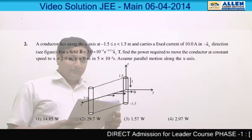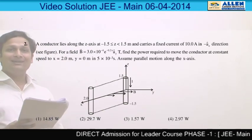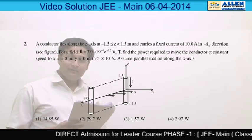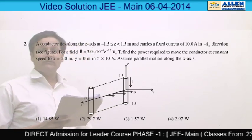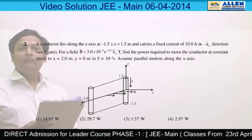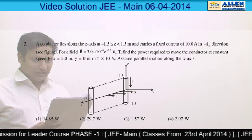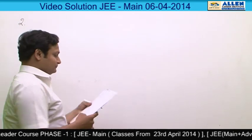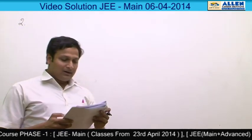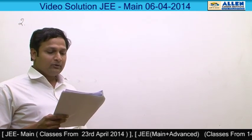Question number 2. The basic philosophy behind this question is the force on a conducting wire due to a magnetic field, work done by an external agent in moving that wire, and average power delivered by the external agent. The question: a conductor lies along the z-axis from −1.5 to 1.5 meters and carries a fixed current of 10 ampere.